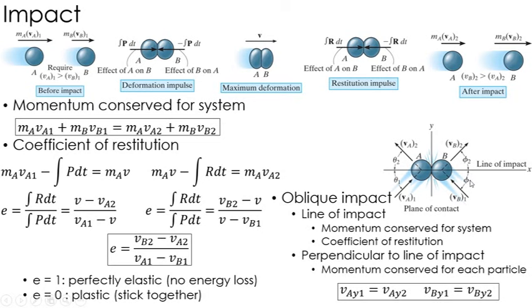Now, perpendicular to the line of impact, there is no impulse, right? The impulse is directed along the line of impact. Perpendicular to that, there is no impulse.